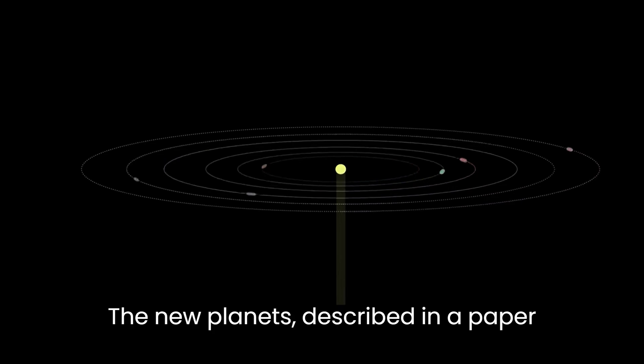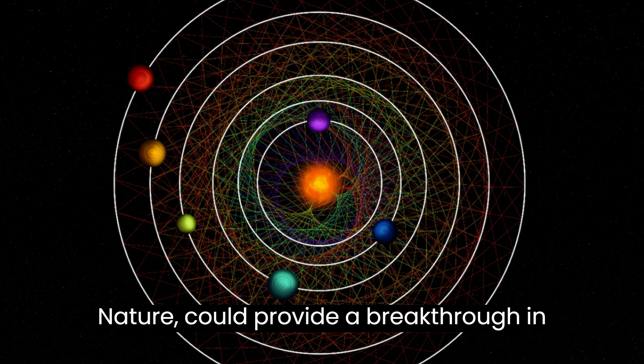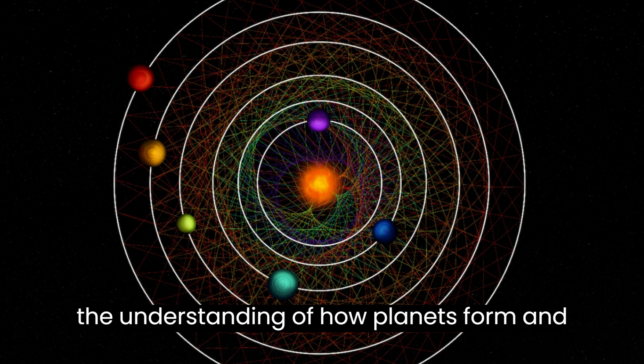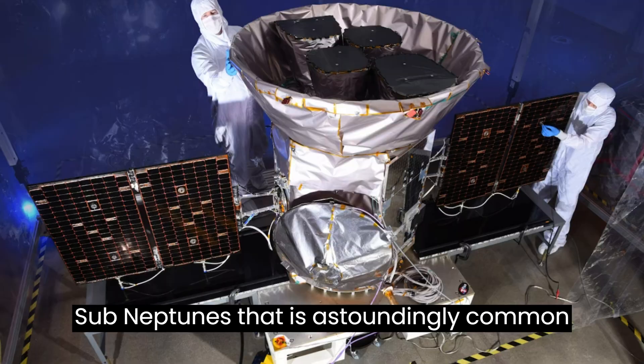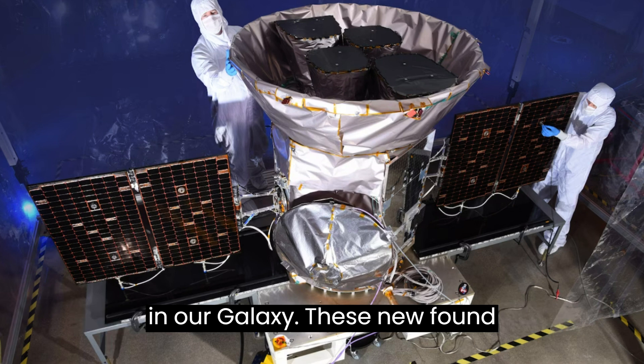The new planets, described in a paper published Wednesday in the journal Nature, could provide a breakthrough in the understanding of how planets form and why there are so many between the sizes of Earth and Neptune, a class known as sub-Neptunes that is astoundingly common in our galaxy.